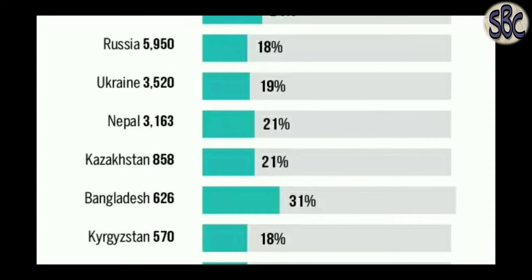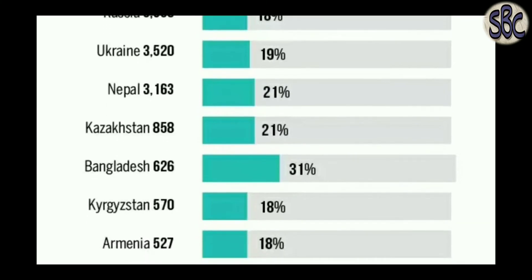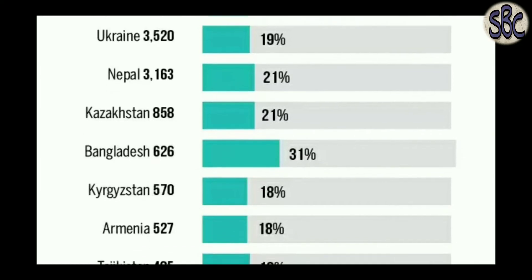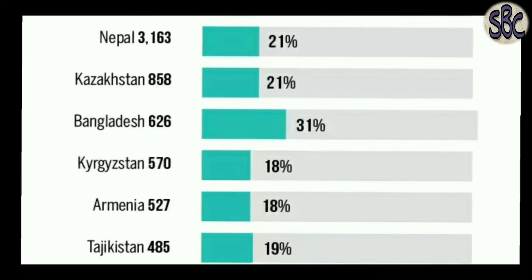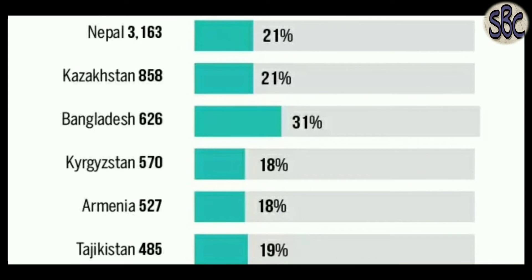For Nepal: 3,163 students appeared with a passing percentage of 21%. For Kazakhstan: 858 students appeared with a passing percentage of 21%. For Bangladesh: 626 students appeared for FMG, with a passing percentage of 31% — which is the highest.